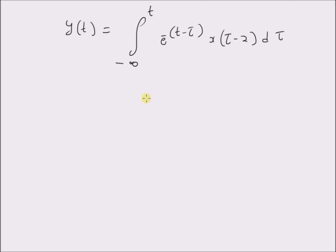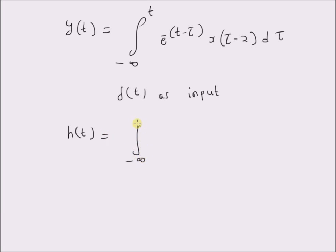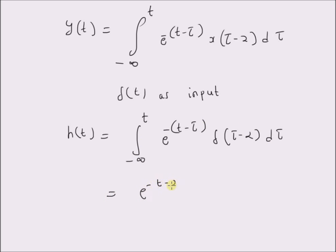In order to derive the impulse response, we use the impulse signal δ(t) as input — that is, we replace x(τ-2) with δ(τ-2). Then h(t) is equal to the integral from minus infinity to t of e^(-(t-τ)) · δ(τ-2) dτ. By using the shifting property, this equals e^(-(t-2)).